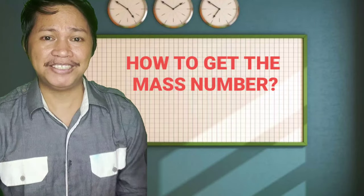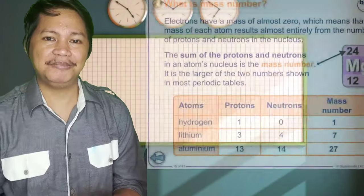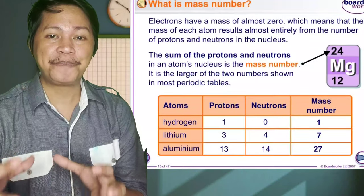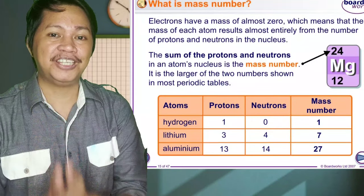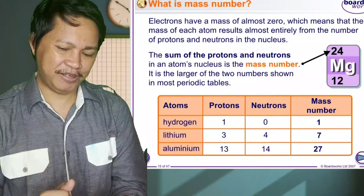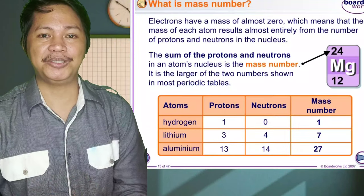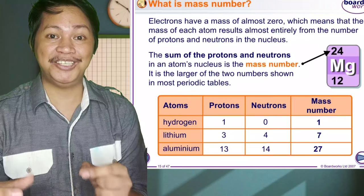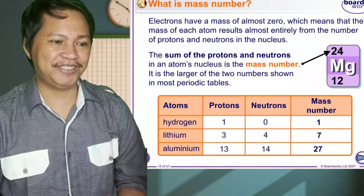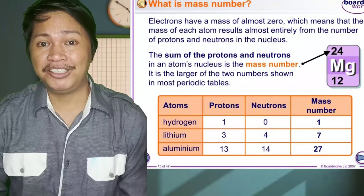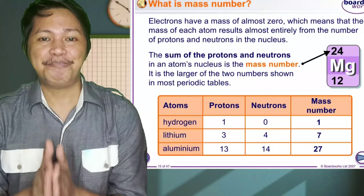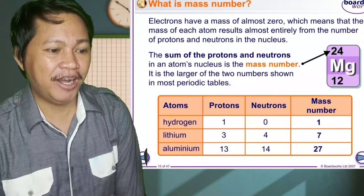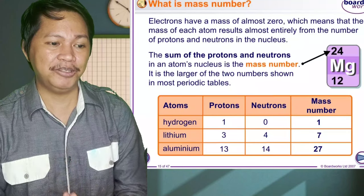So how do you get the mass number? In getting the mass number, you simply add these two subatomic particles: neutron and proton. So if you're going to add these two subatomic particles, then you get the mass number. Mass number is the larger of the two numbers shown in the periodic table. For example, we have hydrogen, lithium, and aluminum.